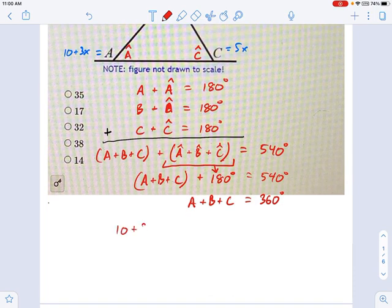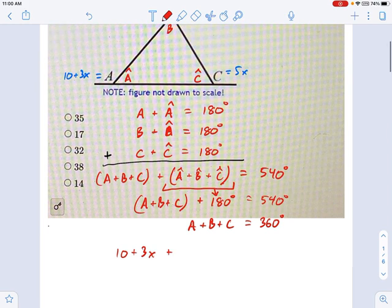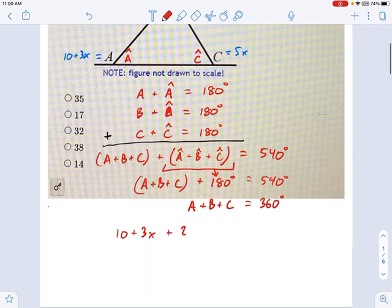A is 10 plus 3x, B is 2x, and C is 5x. And as you look at it now, you should see there's only one variable. We can solve this.